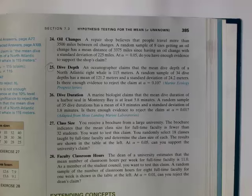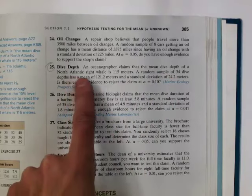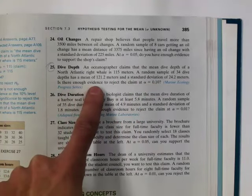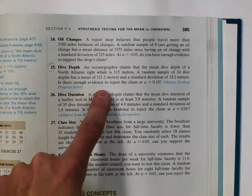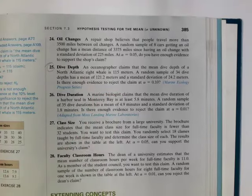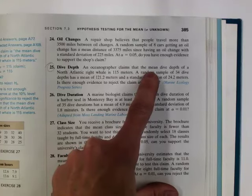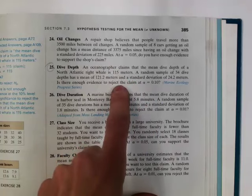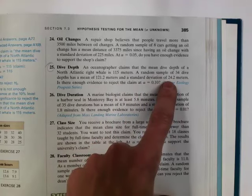Let's take a look at this problem. An oceanographer claims that the mean dive depth of a North Atlantic right whale is 115 meters. A random sample of 34 dive depths has a mean of 121.2 meters and a standard deviation of 24.2 meters. Is there enough evidence to reject the claim at alpha equal 0.1? The claim is about a mean, so my parameter is mu. Since I'm given the sample standard deviation — not the population standard deviation — this is going to be a t-test.